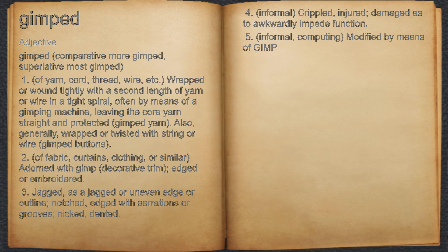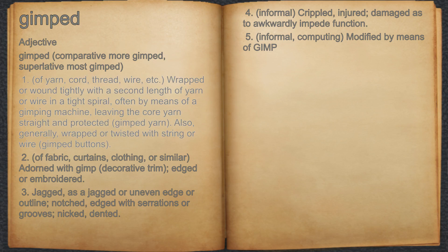1. Of yarn, cord, thread, wire, etc.: wrapped or wound tightly with a second length of yarn or wire in a tight spiral, often by means of a gimping machine, leaving the core yarn straight and protected. Also, generally, wrapped or twisted with string or wire.